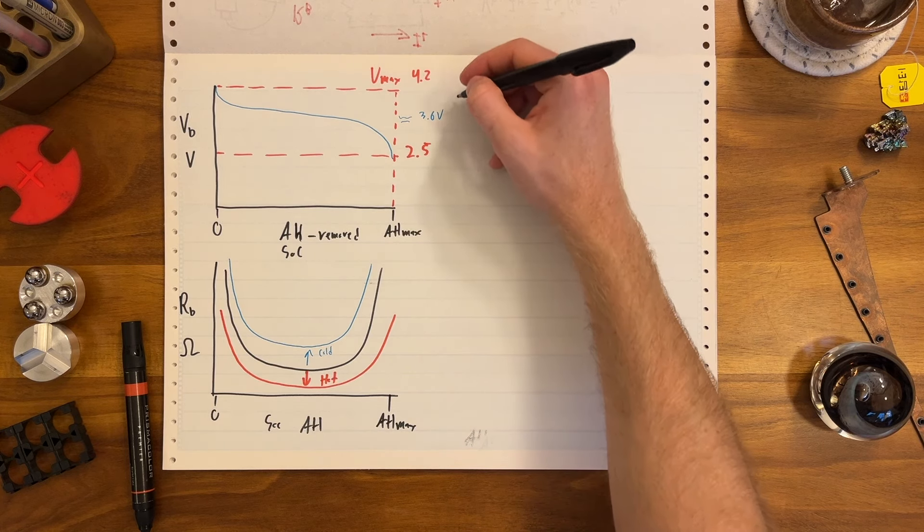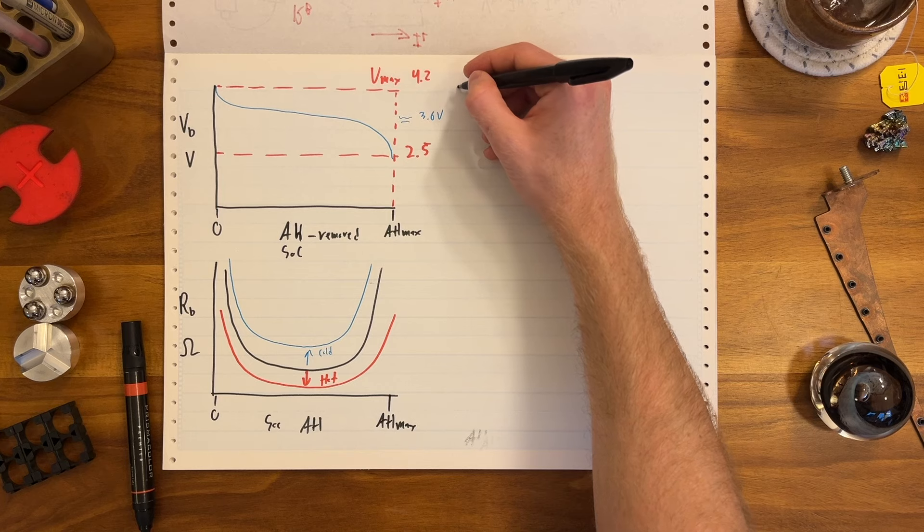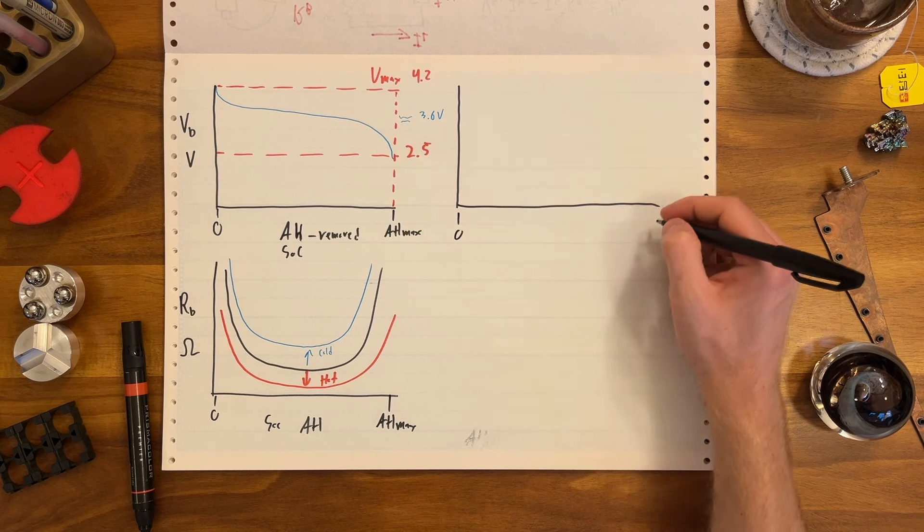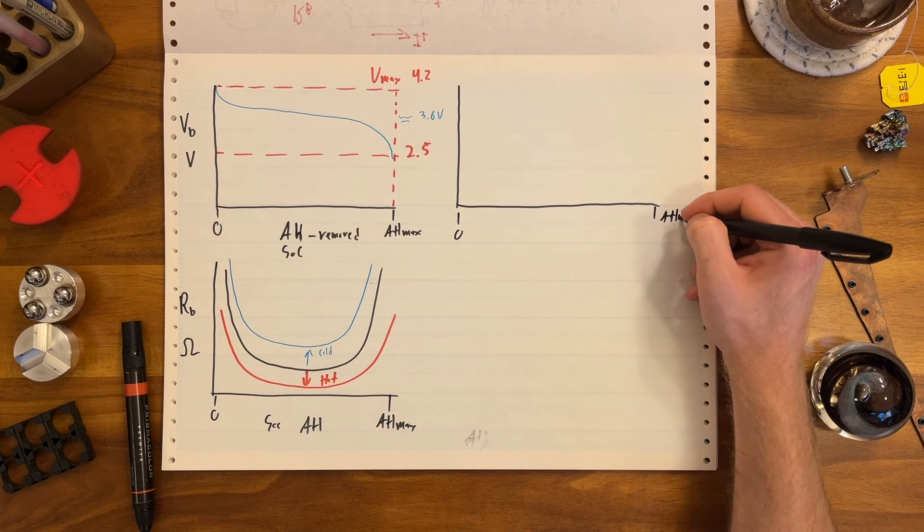There's other caveats, such as charging rapidly while cold is also very damaging to the battery, but discharging rapidly while cold, not so much. But essentially, the resistance of the battery is highly temperature dependent.